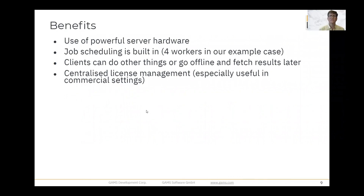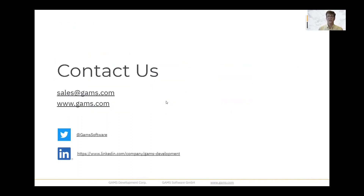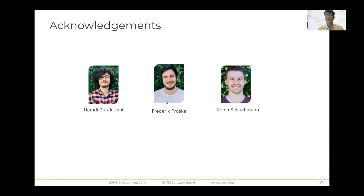In closing, I'd like to mention some of the benefits of using Engine. If you've got powerful server hardware, whether on-prem or in the cloud, Engine provides a way to harness that and let a number of people use that hardware. Job scheduling is built in, so there's no need to build your own scheduling solution. Engine gives your clients the ability to do other things, to be offline after they submit jobs and collect results later. And finally, you get centralized license management, which can be really useful in larger organizations. I should thank my colleagues who did the programming work on GAMS Engine — Urak, Freddie, and Robin. If you wind up talking to them in any interaction with GAMS about Engine or anything else, you're in good hands.